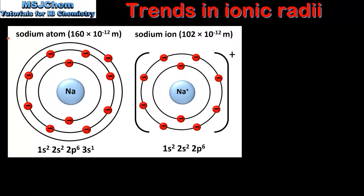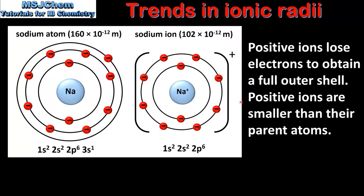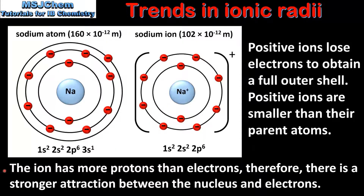We'll end the video by looking at the difference in sizes between ions and their parent atoms. The first example is the sodium atom and the sodium ion. If we compare the atomic radius and the ionic radius we can see that the sodium ion is smaller than its parent atom. By looking at the electron configuration we can see that the sodium atom has lost the one electron in the 3s sublevel. Positive ions lose electrons to obtain a full outer shell, and positive ions are smaller than their parent atoms. The reason is that the ion has more protons than electrons, so there is a stronger attraction between the nucleus and the electrons. Another reason is that the ion has 2 occupied energy levels whereas the atom has 3. This is why the sodium ion, the magnesium ion and the aluminium ion are all smaller than their parent atoms.